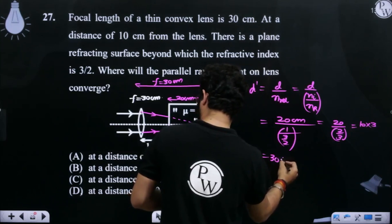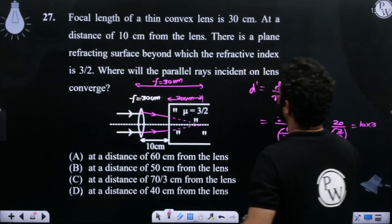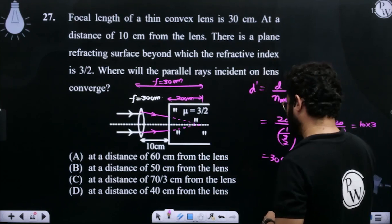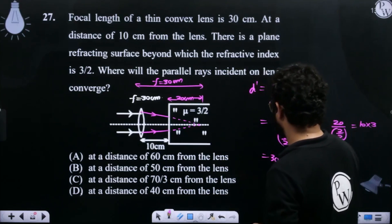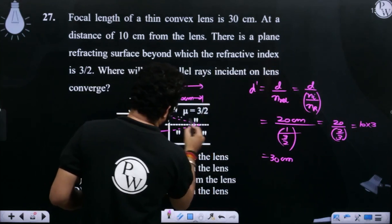It is 30 cm. So, distance is given by lens. The distance should be here.